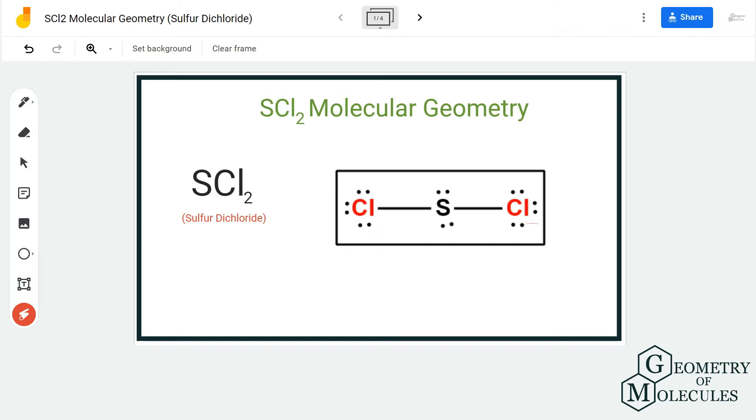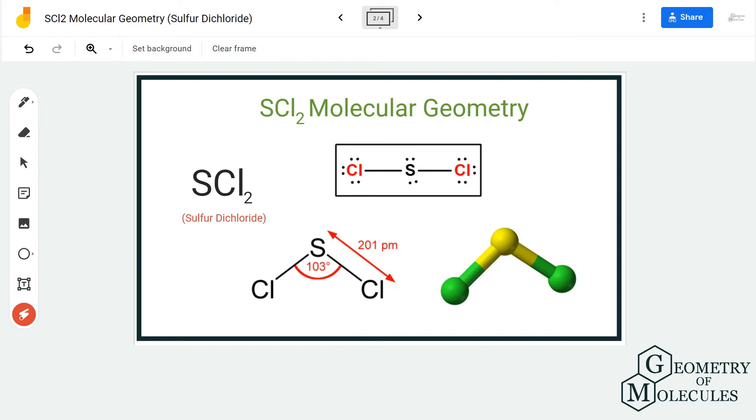But wait, you have to look at its 3D structure to understand it better. If you look at it in 3D, you can see that these two lone pairs of electrons on the sulfur atom cause repulsive forces.